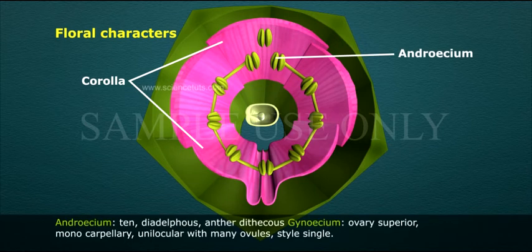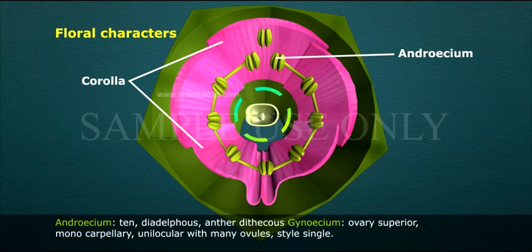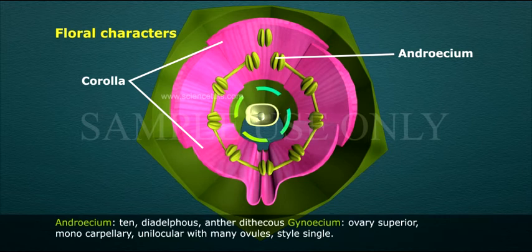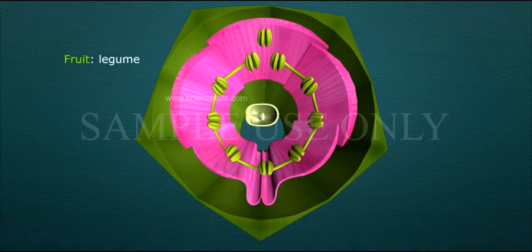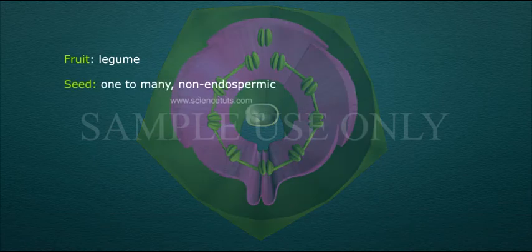Androecium: 10, diadelphous. Anther dithecous. Gynoecium: ovary superior, monocarpillary, unilocular, with many ovules, style single. Fruit: legume. Seed: one to many, non-endospermic.